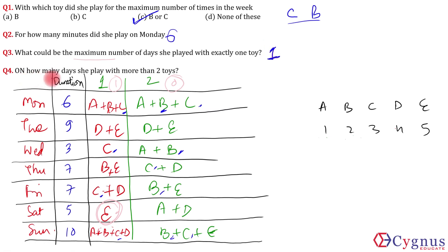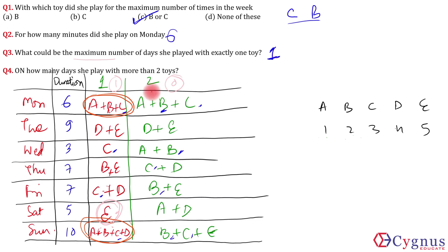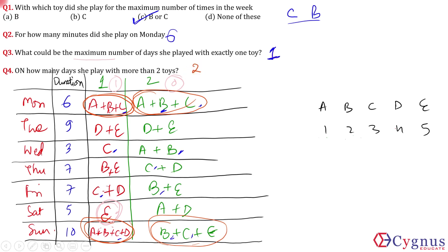Question 4: on how many days did she play with more than 2 toys? In Case 1, she plays with more than 2 toys on Monday (A+B+C) and Sunday (B+C+E) — 2 days. In Case 2, she plays with more than 2 toys on Monday (A+B+C) and Sunday (A+B+C+D) — again 2 days. Since the answer is 2 in both cases, the definite answer is 2.